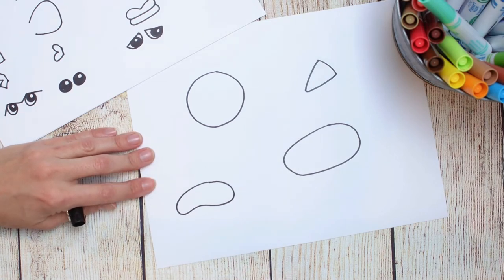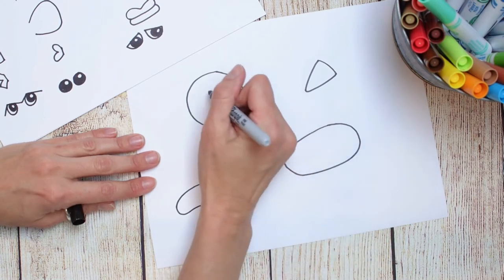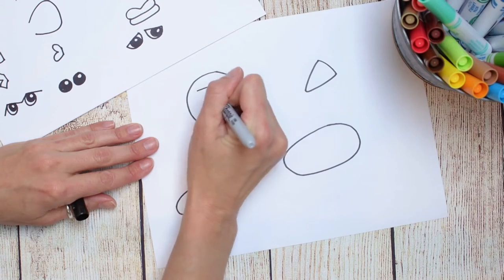Now, after you've got those basic shapes laid out on your paper and you've kind of filled your paper up, we're going to add some details. So choose from those features that we talked about earlier, the different kinds of eyes, the different kinds of fins,